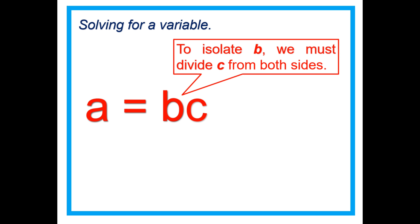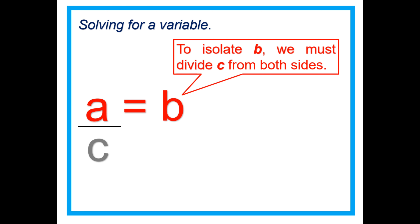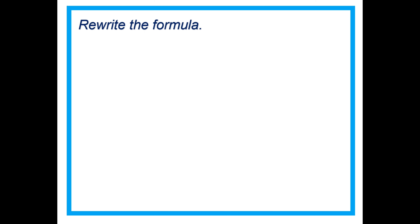To isolate B, we must divide C from both sides: BC divided by C, and A divided by C. That cancels C, leaving B isolated.